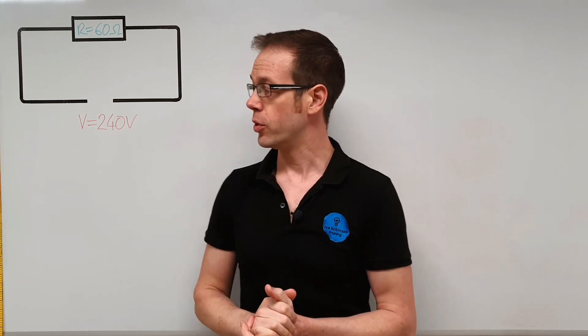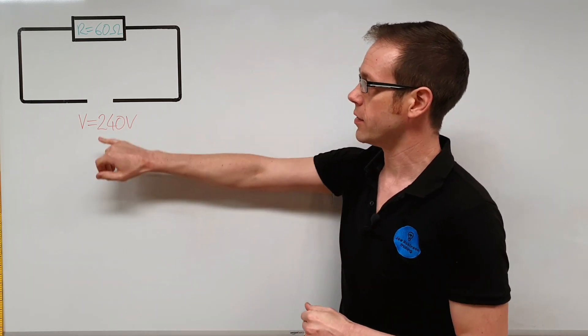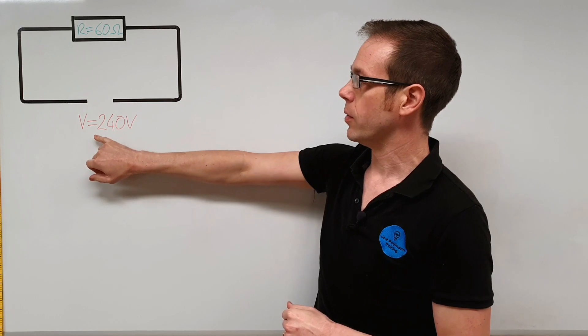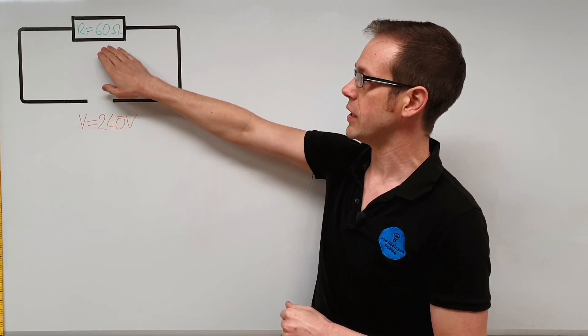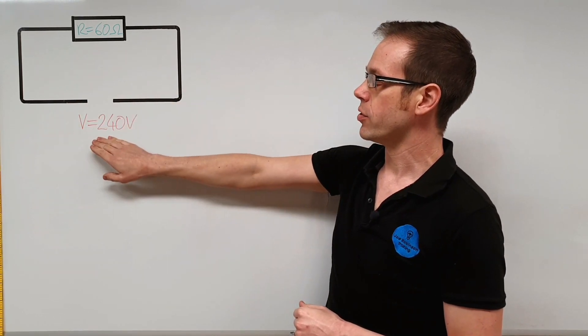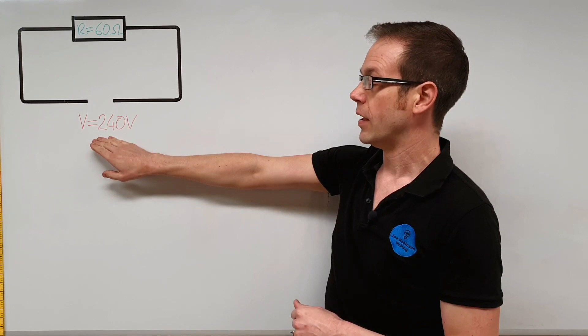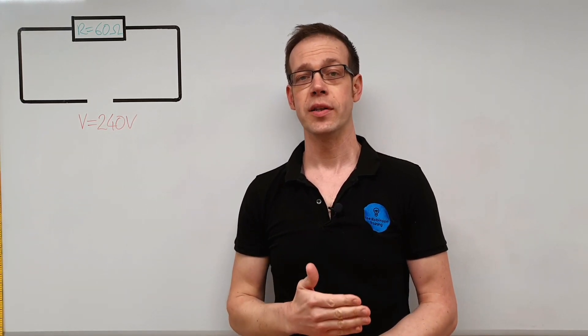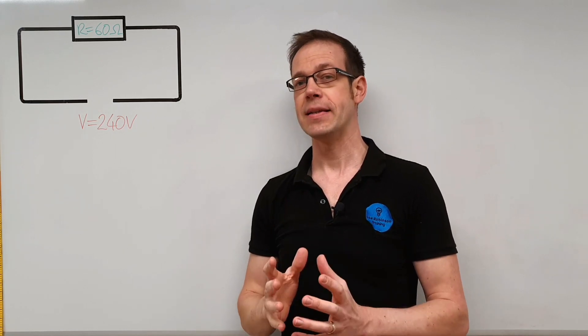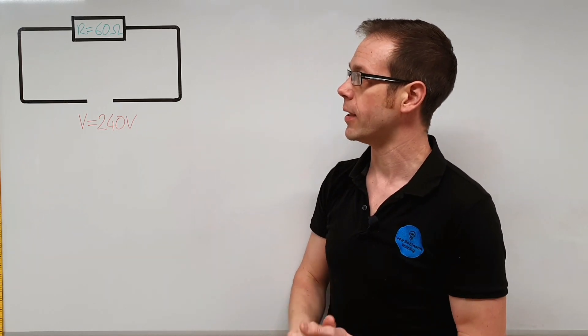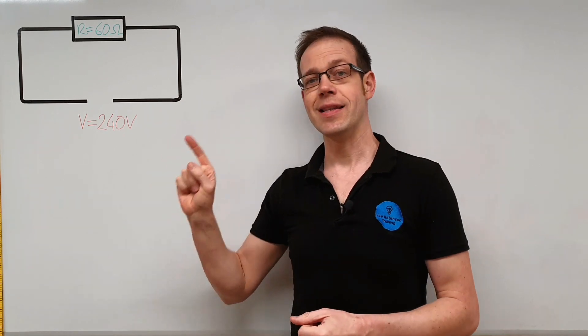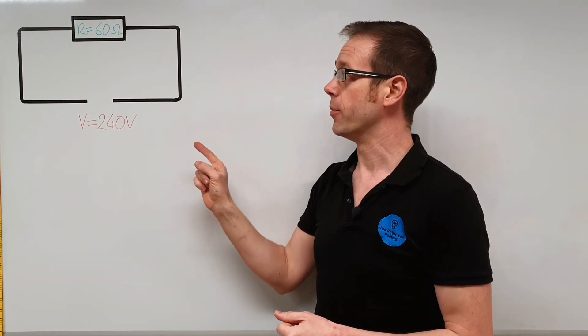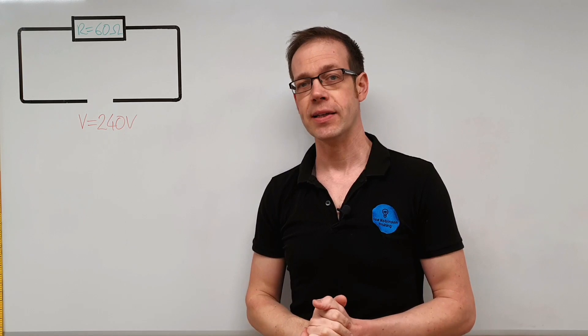You can see on the board here we've got our circuit that we've started off very simply. We've got a resistor connected to a voltage supply, so we've got 60 ohms connected and we've got 240 volts. Now if you've been following these videos, you'll know that we need one more thing in order to be able to calculate power with our basic power formula. There's one critical thing missing from this circuit, and that one critical thing is the current. We don't actually know at the moment how much current is flowing into this circuit.